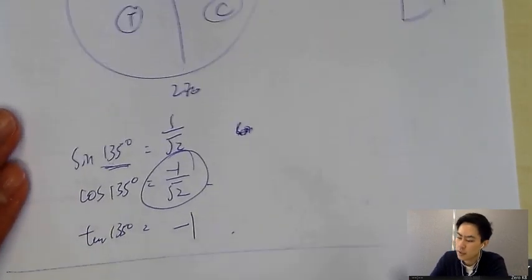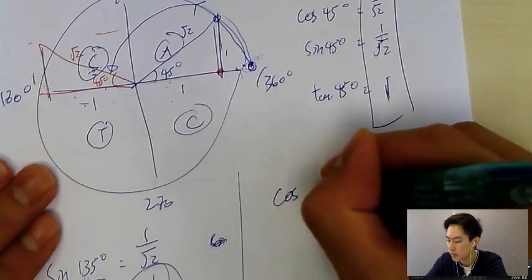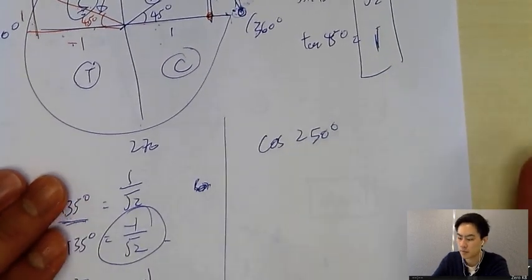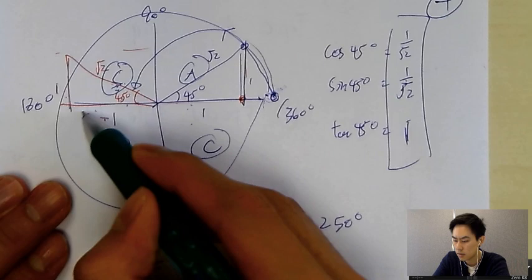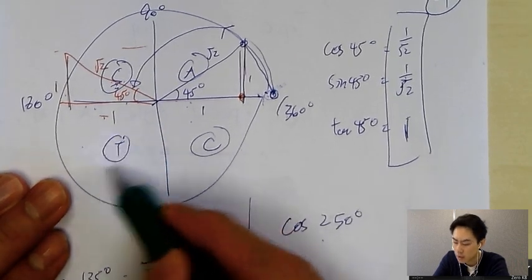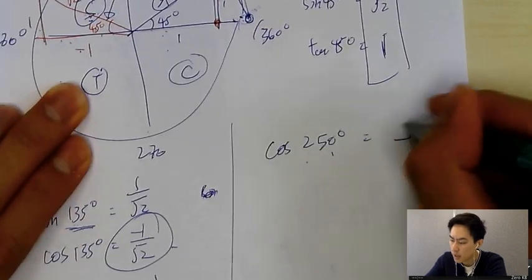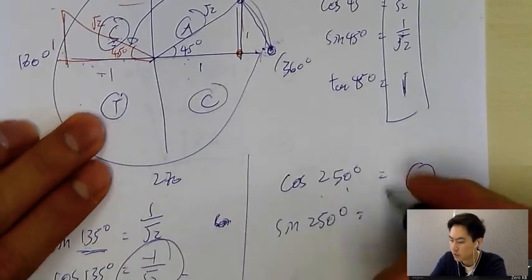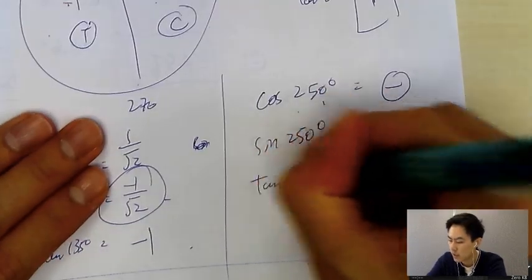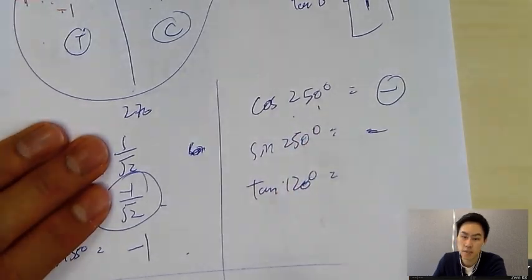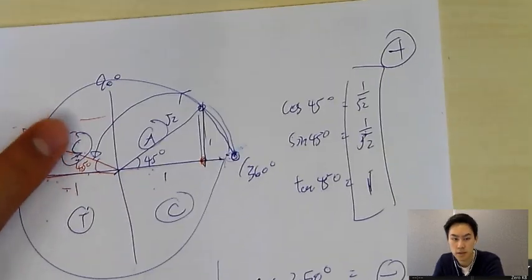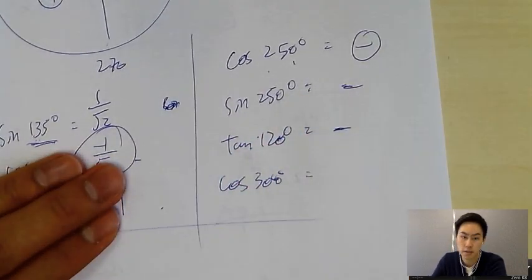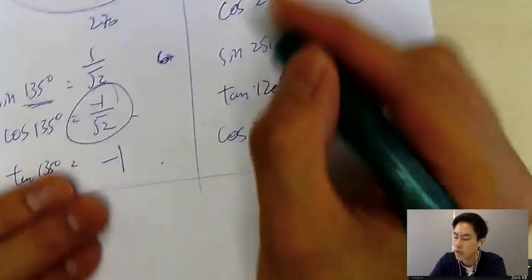Applying the CAST rule to specific angles: cosine 250° — since 250° is in the third quadrant (tangent region), cosine is negative. Sine 250° is also negative in that region. Tangent 120° — 120° is in the sine region (second quadrant), so tangent is negative. Cosine 300° — 300° is in the fourth quadrant (cosine region), so cosine is positive.